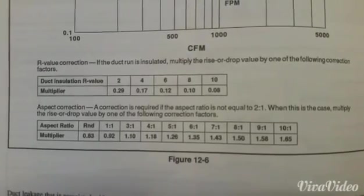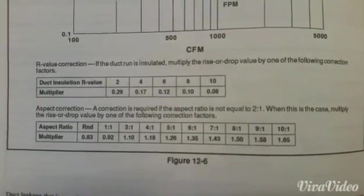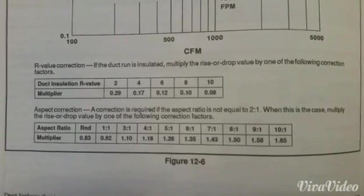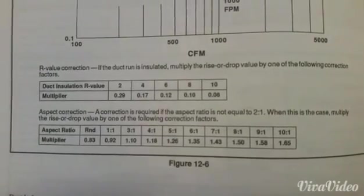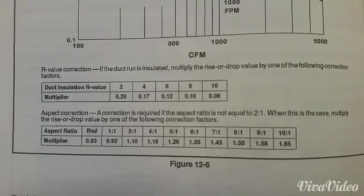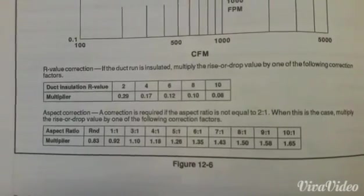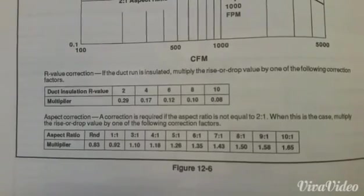Considering that ductwork, if we insulate it to R8 as seen on the chart, we have a 0.10 multiplier. Meaning if we would have lost 8 degrees in that run, we would only lose 0.8 degrees by insulating it to R8. So you can see a big difference between not insulating the ductwork, having R8.